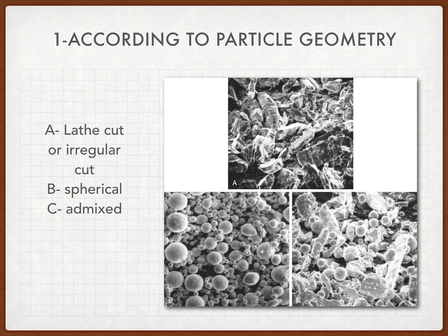The lathe cut or irregular shaved particles were contained in the original amalgam used in the 1830s, which used fillings from coins and hence had irregular shapes. This type of amalgam requires more force than spherical particles during condensation to prevent voids. The spherical particles shape generally requires less mercury and sets faster, but some feel it has greater margin leakage and more frequent post-operative sensitivity.